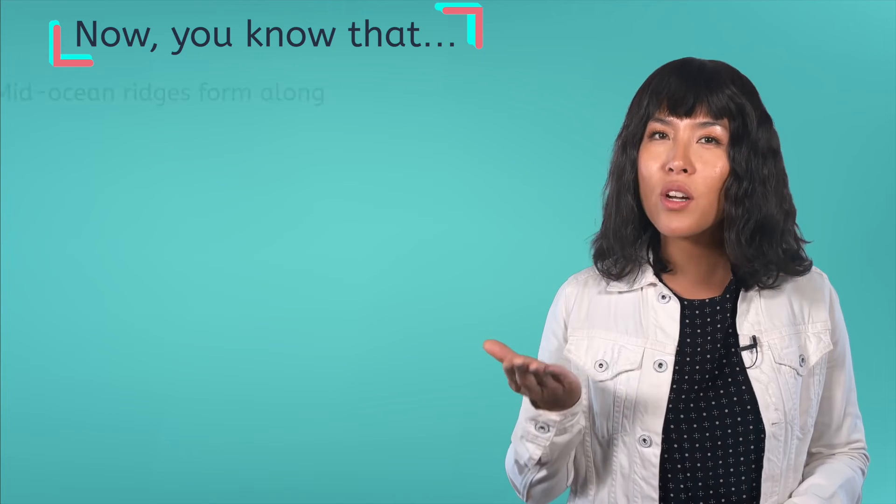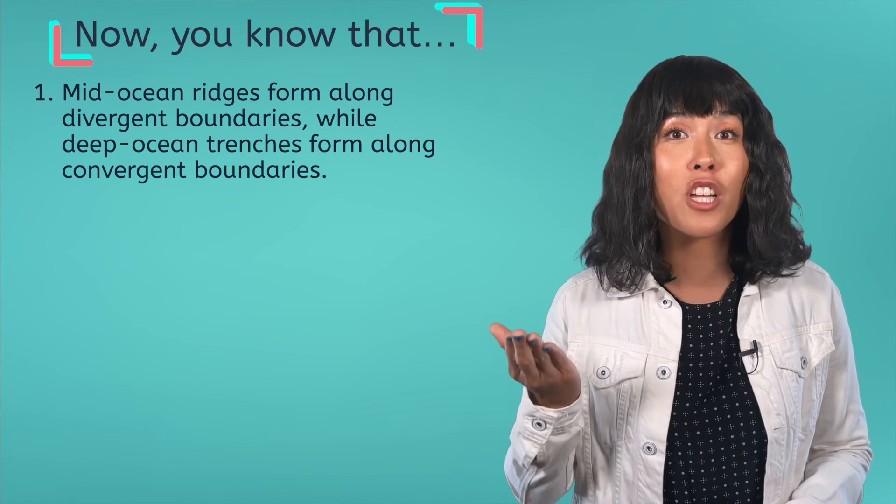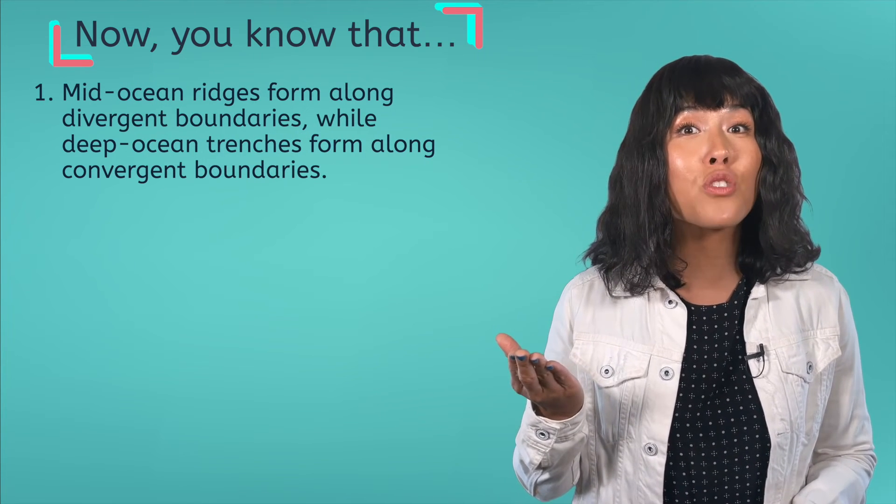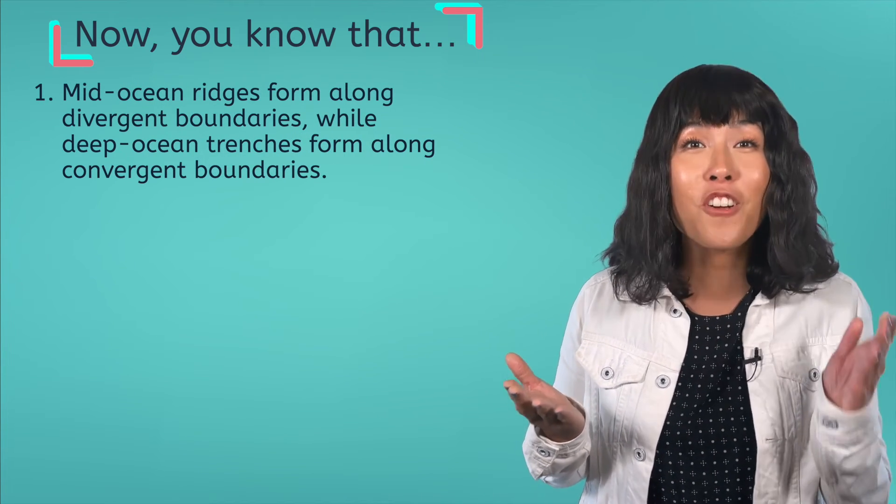So, let's go over what we learned today. Now you know that mid-ocean ridges form along divergent boundaries, while deep ocean trenches form along convergent boundaries.